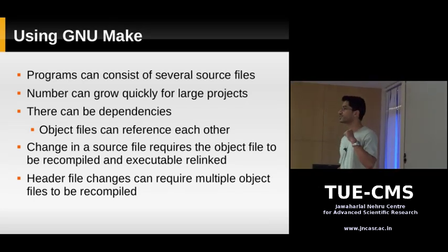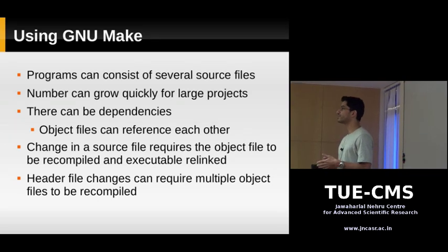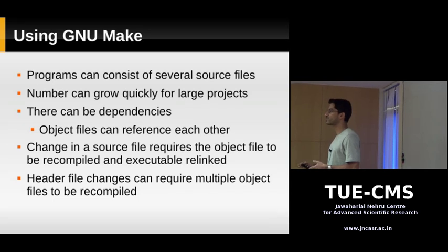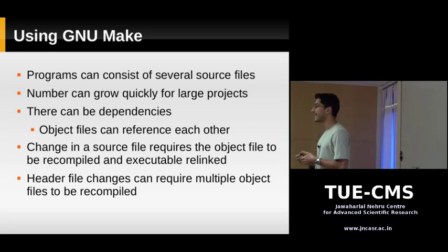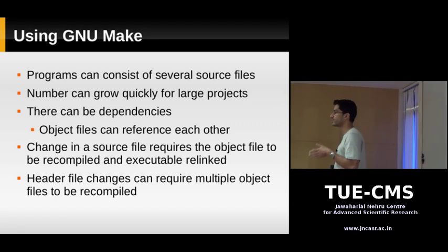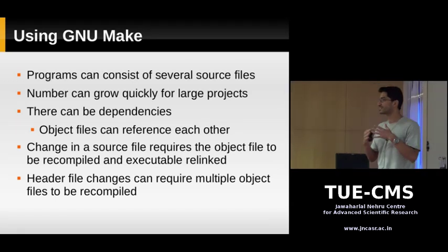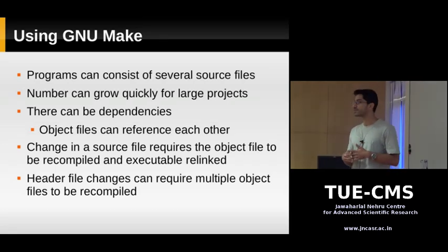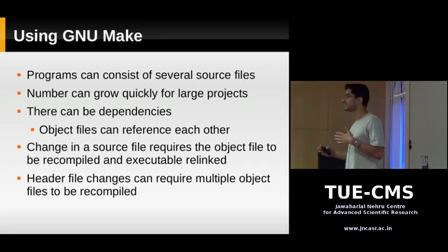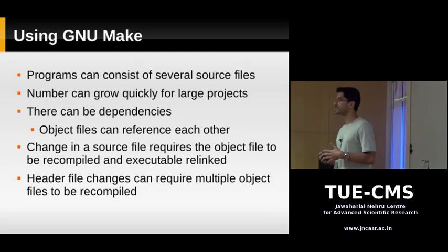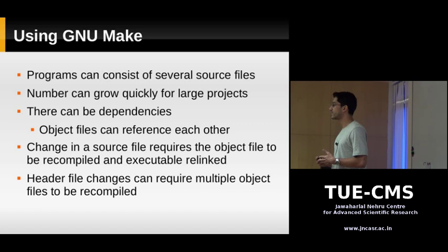A single header file can be included by more than one source file. If you make a change to that header file, you would have to recompile all the source files that included it and recreate the object files. As the number of source files grows, dependencies become complicated, and it becomes difficult for the programmer to keep track of which source files changed and which need to be recompiled.